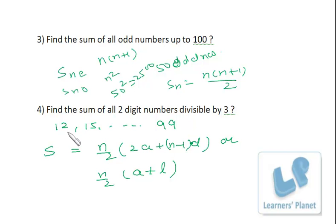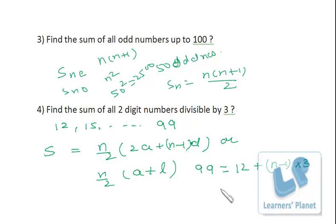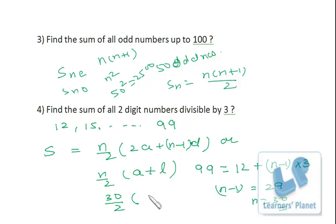First we find n. The nth term is 99 = 12 + (n−1)×3, so n−1 = (99−12)/3 = 87/3 = 29, giving n = 30. There are 30 terms in this sequence. Now substituting: sum = 30/2 × (12 + 99) = 15 × 111, and you can calculate the final answer easily.